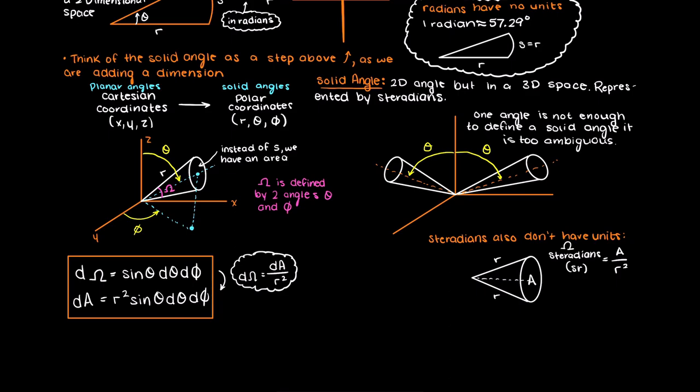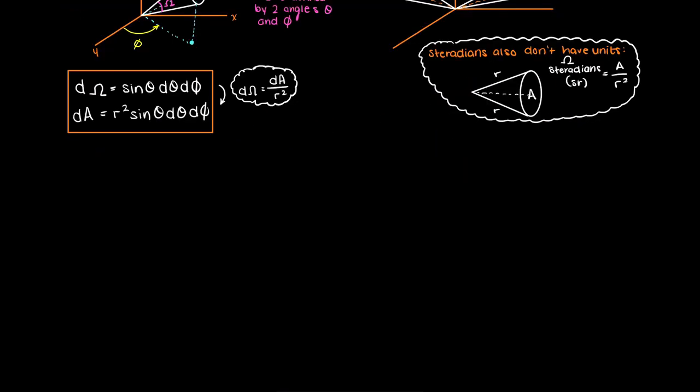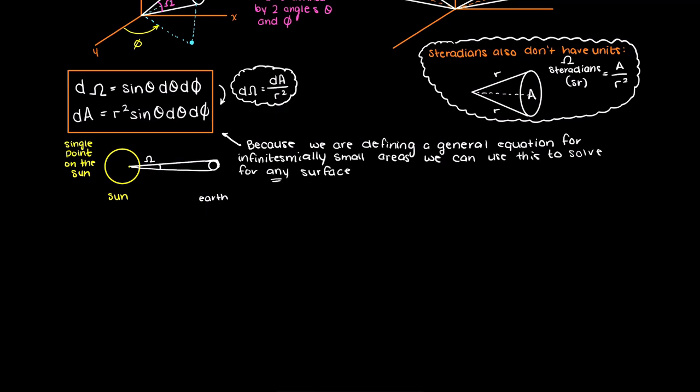So, just as a note, in layman's terms, the solid angle is commonly used to calculate how much of an object is in a field of view of another. As a quick example, imagine a single point on the sun that is emitting radiation. Through a solid angle we could determine how much of the earth is in the field of view of that point, and through things like integration this becomes very powerful.